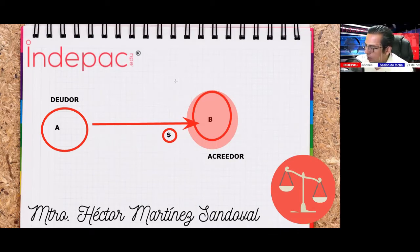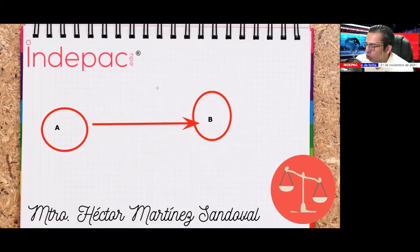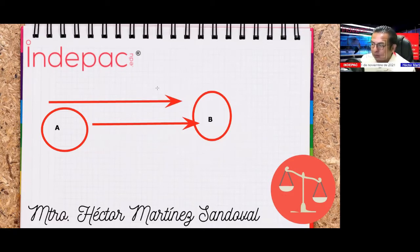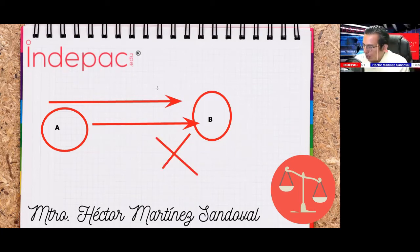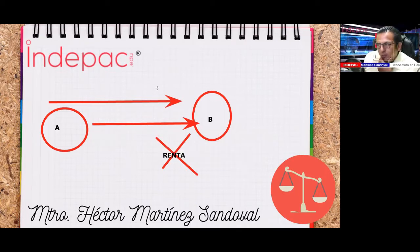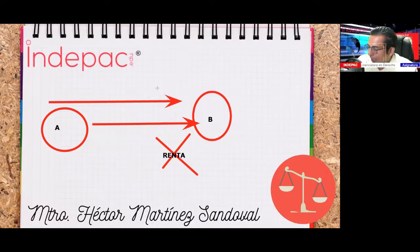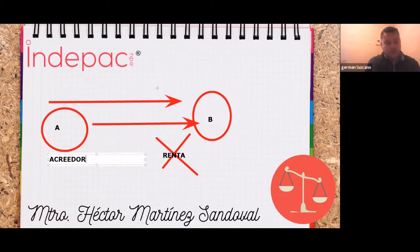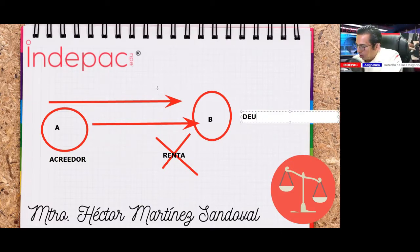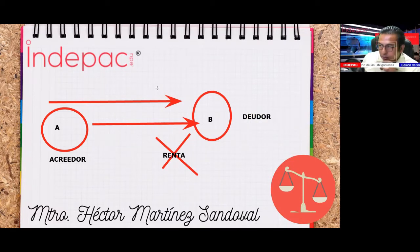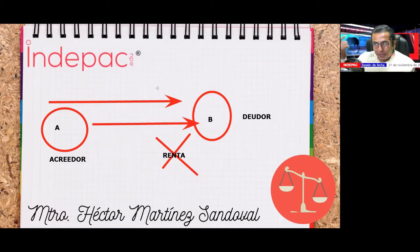En ese segundo caso, A es el acreedor y B es el deudor, porque A le va a exigir a B el cumplimiento de la obligación. El contenido de la obligación puede ser de dar, de hacer y de no hacer.